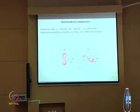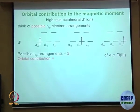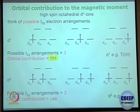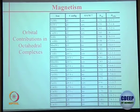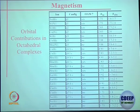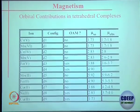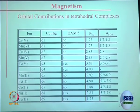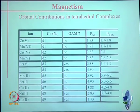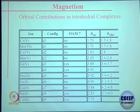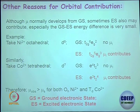We have dz2 and dx2-y2 which are not interconvertible. For d2 we have stated these values and whether orbital contribution is possible or not — a yes or no answer. The same is true for tetrahedral complexes. If there is any discrepancy, please let me know — this data is taken directly from the book.